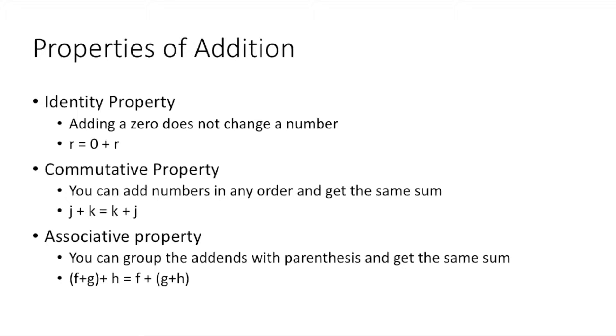In the identity property, adding a zero does not change a number. So r = 0 + r. In the case of five as r, five plus zero is still equal to five. That would be an example of the identity property.